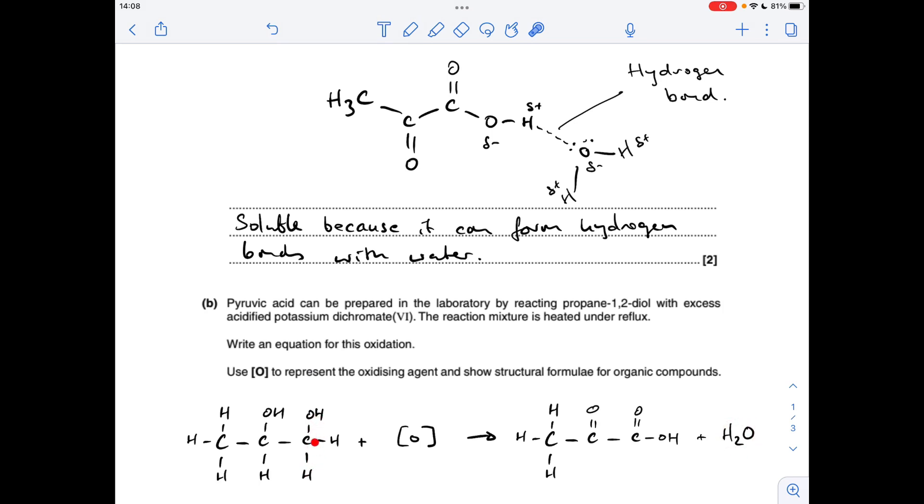This is a primary alcohol, so because it's under reflux, it can be oxidised twice. First to the aldehyde, then to the carboxylic acid. So there's two oxidations taking place for the primary alcohol and one for the secondary. So we need three moles of oxidising agent.